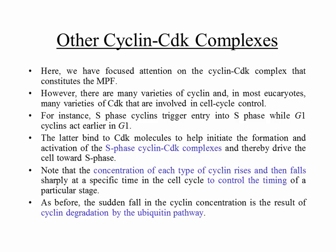The concentration of each type of cyclin rises and then falls sharply at a specific time in the cell cycle. The fall is very sharp; the rise is gradual, because it takes time to build up the cyclin concentration. This gradual rise and then fall controls the timing of that particular stage. As in the case of the M phase promoting factor, the fall in cyclin concentration is the result of cyclin degradation by the ubiquitin pathway.